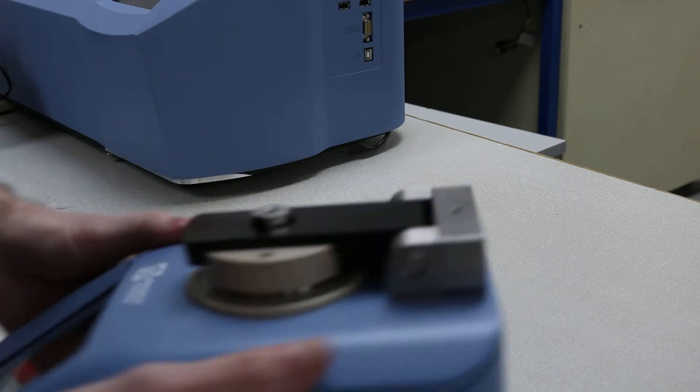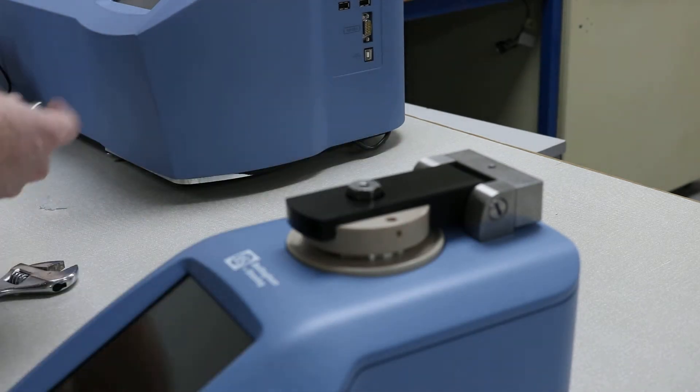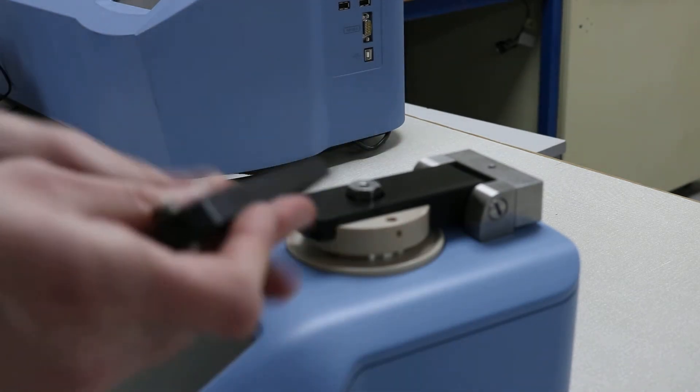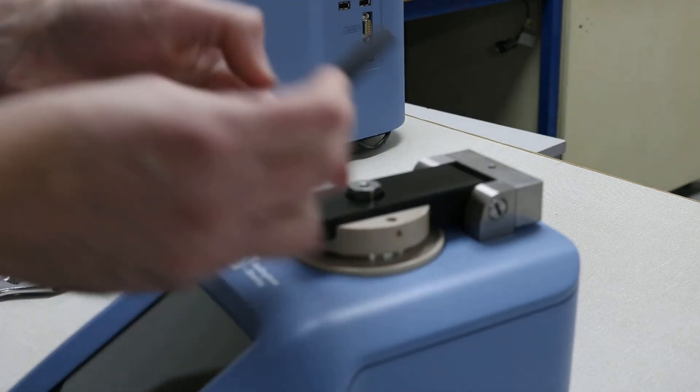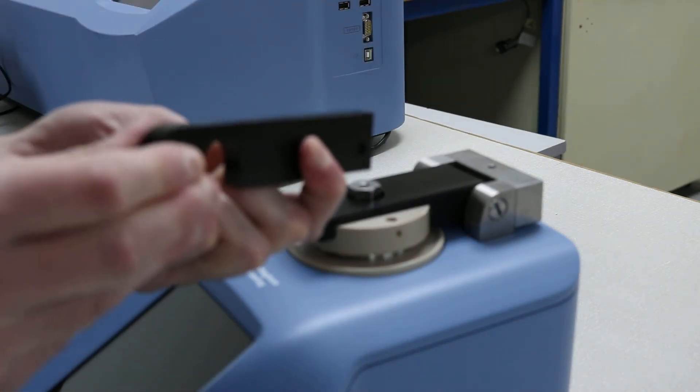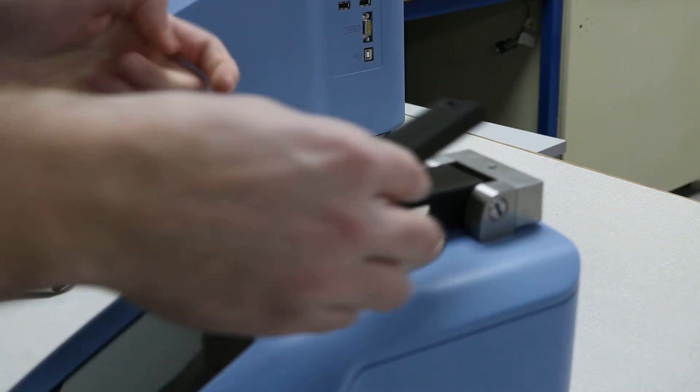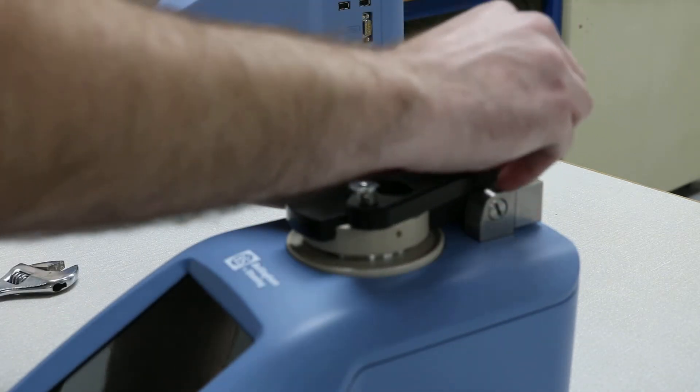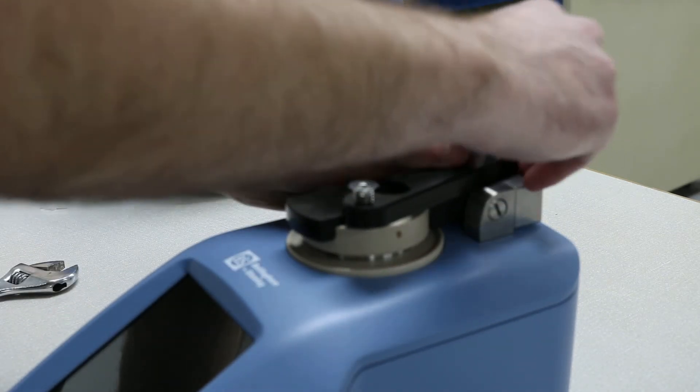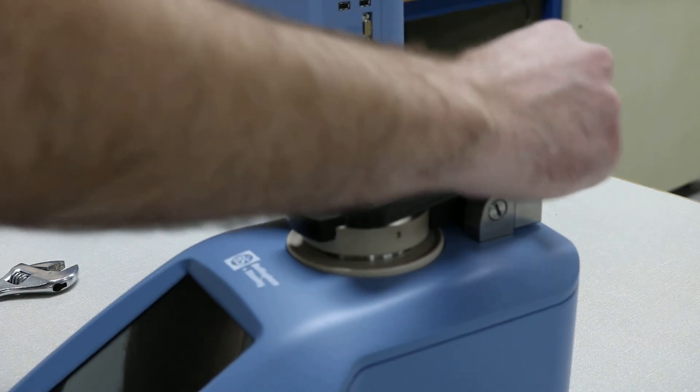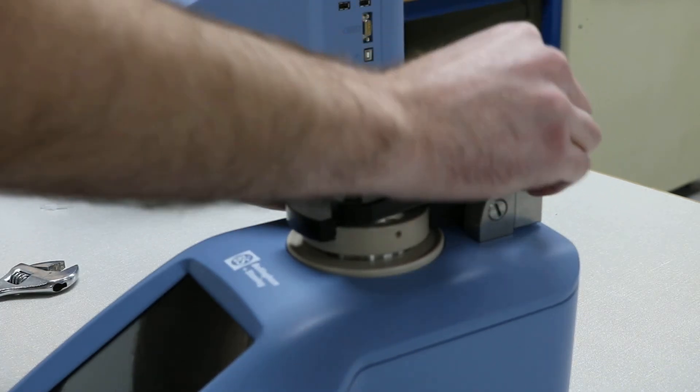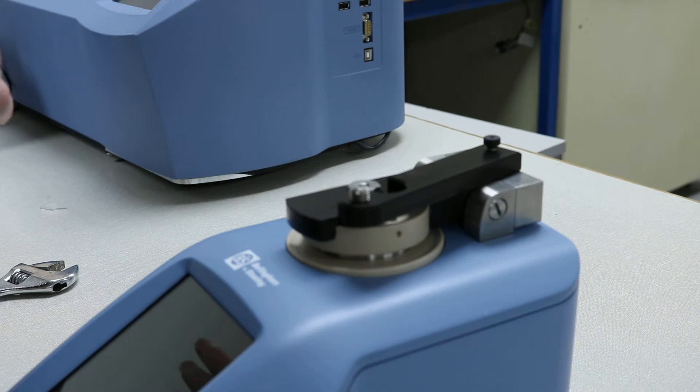And then to hold the arm down itself we have this latch arm. There's a ball latch on the front which will do the holding at the front. This just screws in the hole in the back. Again, use the Allen key to tighten it up.